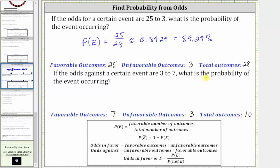And now because the question is find the probability of the event occurring, this will be the favorable number of outcomes divided by the total number of outcomes. So the probability of the event occurring is equal to seven divided by 10 as a fraction, which as a decimal is 0.7, which is equal to 70%.